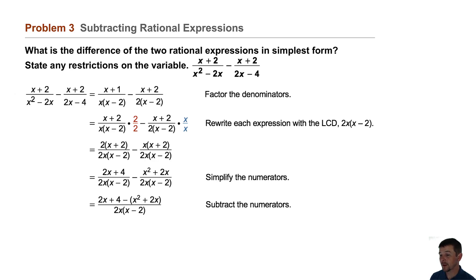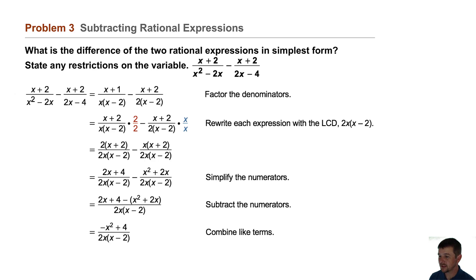Now we'll work to simplify by combining like terms. The numerator becomes negative x squared plus 4, and the same common denominator still remains, 2x times x minus 2.